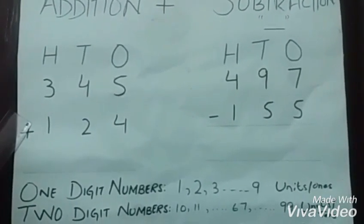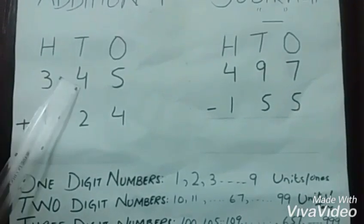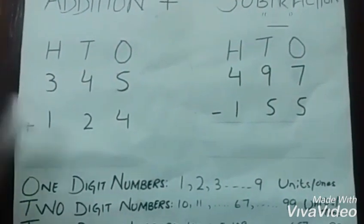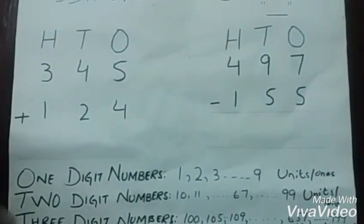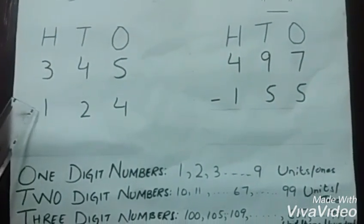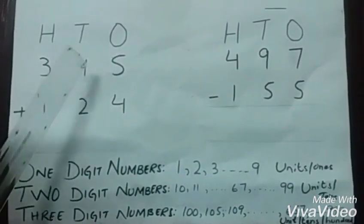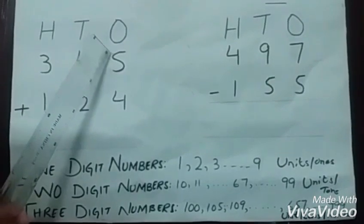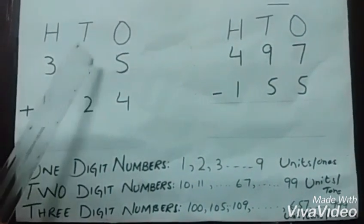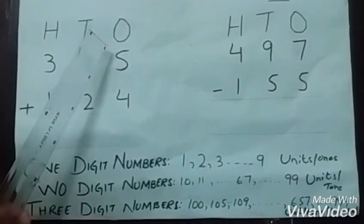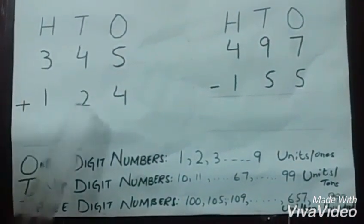Now we will add these three-digit numbers. We have one number that is 345—three hundred, four tens, and five ones or units—and the second number is 124. First of all, we will add ones, then tens, and then hundreds.